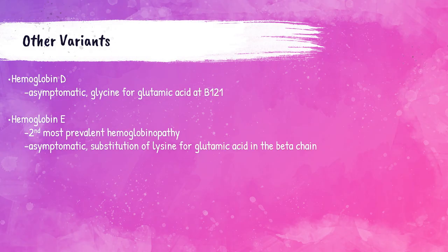Hemoglobin D and hemoglobin E are other variants of hemoglobinopathies. Hemoglobin D occurs when the amino acid glycine is substituted for glutamic acid — patients with this hemoglobin are asymptomatic. Hemoglobin E is the second most prevalent hemoglobinopathy in the world, occurring when lysine is substituted for glutamic acid — patients are also asymptomatic. That ends our lecture on hemoglobinopathies. If this video helped you out, give it a like and please subscribe to my channel for more educational content.